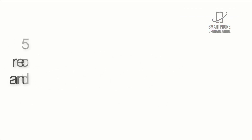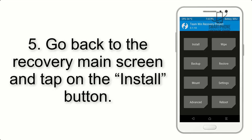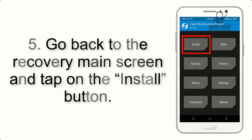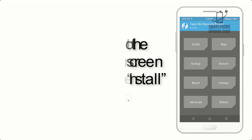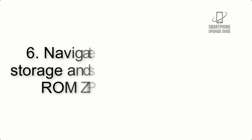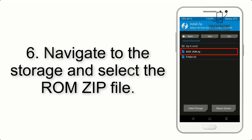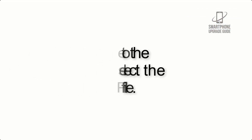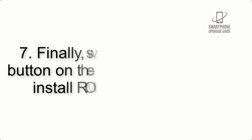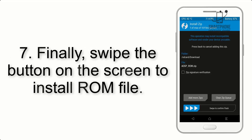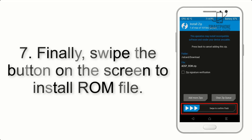Step 4: Swipe the button to wipe the device. Step 5: Go back to the recovery main screen and tap on the Install button. Step 6: Navigate to the storage and select the ROM zip file.